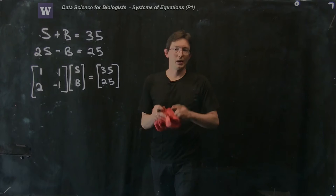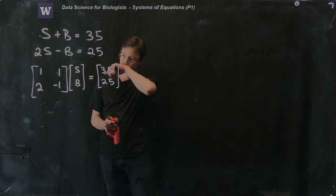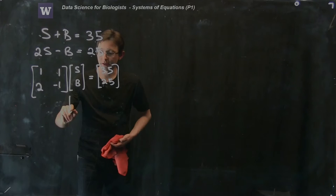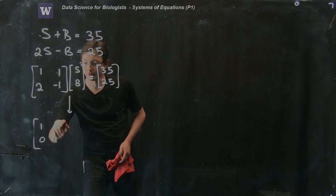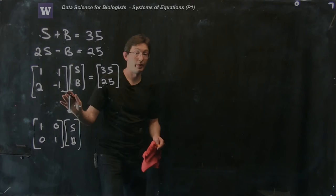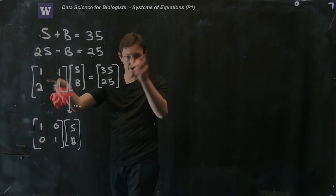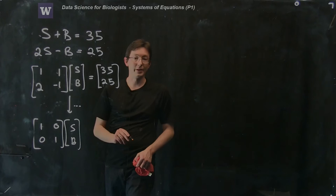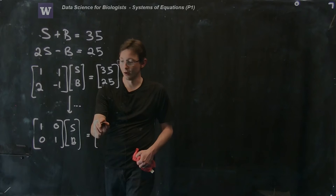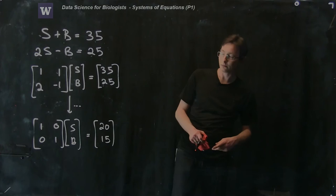Now what we could do is we could recognize, well, we could essentially go through all of the same steps and try to reduce this to something like the identity matrix, and then divide by negative three and add it back and all that stuff. And we're going to eventually get an identity matrix times Sally and Bob equals the numbers we actually cared about, which I think were 20 and 15, right. Sally is 20 and Bob is 15.